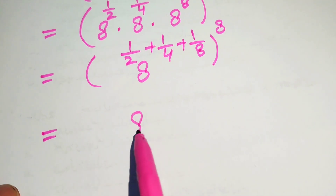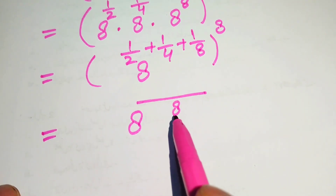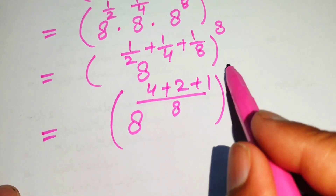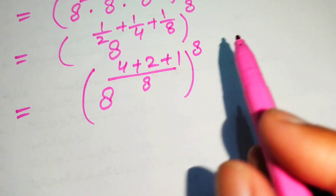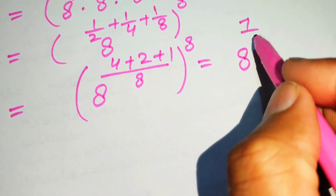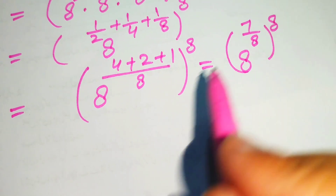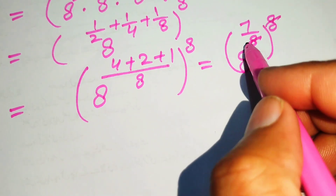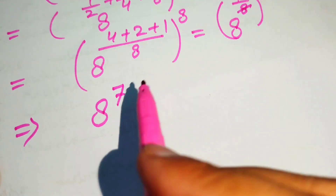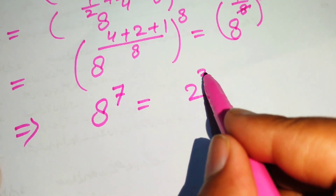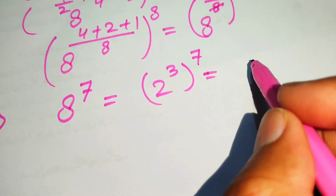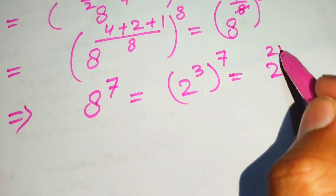We take the LCM of the exponent, which is 8, and we get 4 plus 2 plus 1, with whole exponent 8. This simplifies to 8 to the power of 7 over 8, with whole exponent 8. This 8 is cancelled by that 8 and we get 8 to the power of 7. We know that 8 equals 2 to the power of 3, with whole exponent 7, so 7 times 3 equals 21. We finally get 2 to the power of 21.